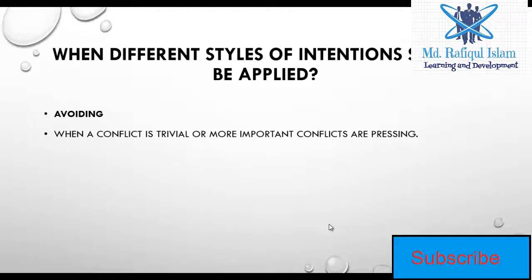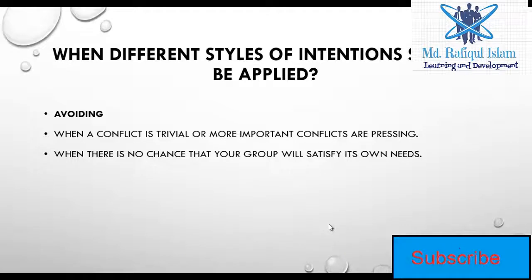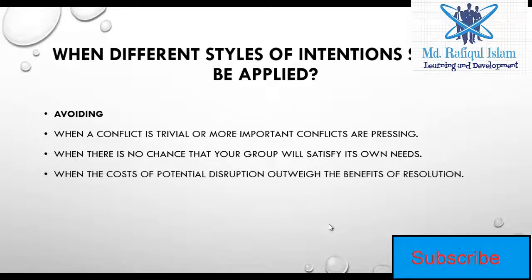The next one is avoiding. Under avoiding, you give no importance to your own interest or to the other party's interest. You use this style when a conflict is trivial, or when more important conflicts are pressing and you have other issues that need attention. You also avoid when there is no chance your group will satisfy its own needs.